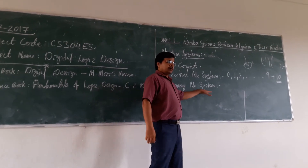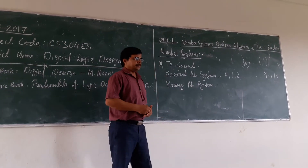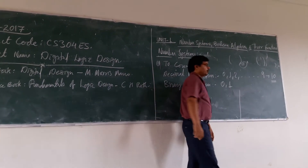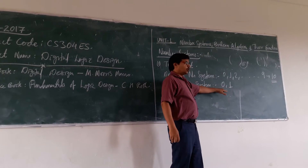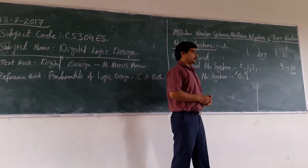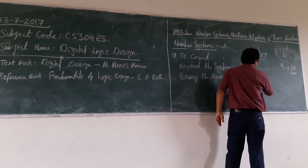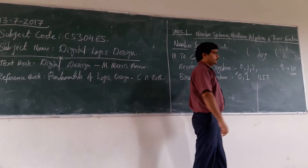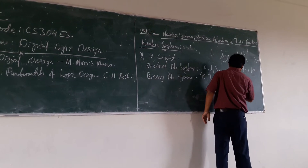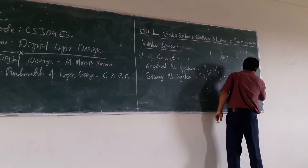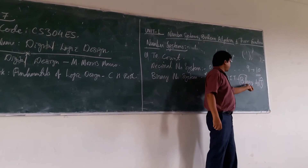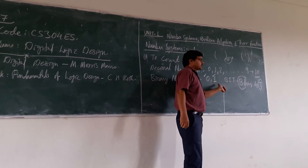The next number system is the binary number system. In the binary number system, you will have only 2 digits — that is 0 and 1. Each digit is called a bit. B-I-T — bit. So, this is called a bit.